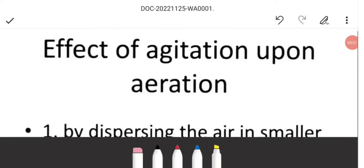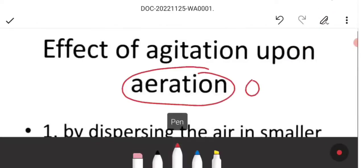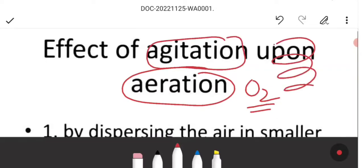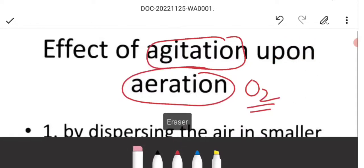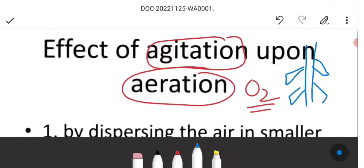What is the effect of agitation upon the aeration? Aeration means oxygen's introduction, which is from spargers. Agitation means which is a system that goes into the bioreactor, which is called impellers, which is called blades.